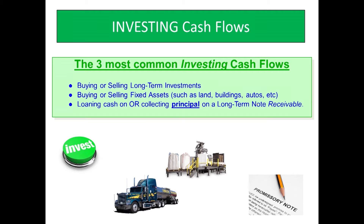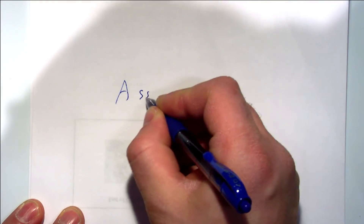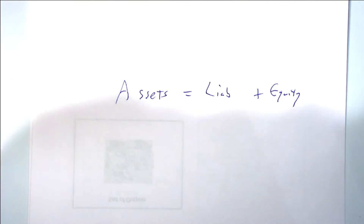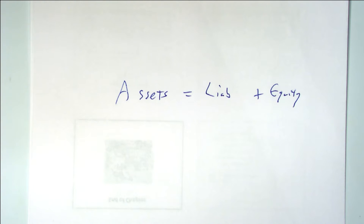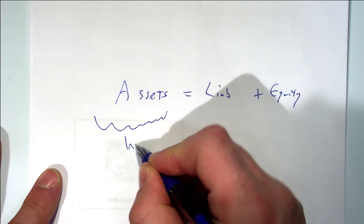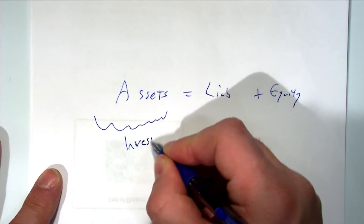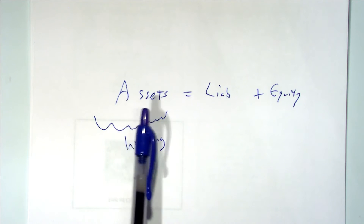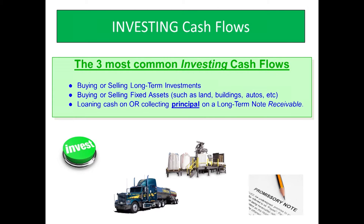I want you to notice something about these investing cash flows. Our accounting equation is assets equals liabilities plus equity. At least at where you are now, these investing cash flows have to do with long-term assets. Buying or selling long-term investments — isn't that a long-term asset? Buying or selling fixed assets like land, buildings, automobiles, equipment — those are long-term assets. A long-term note receivable is also a long-term asset. That can guide you in this early stage.